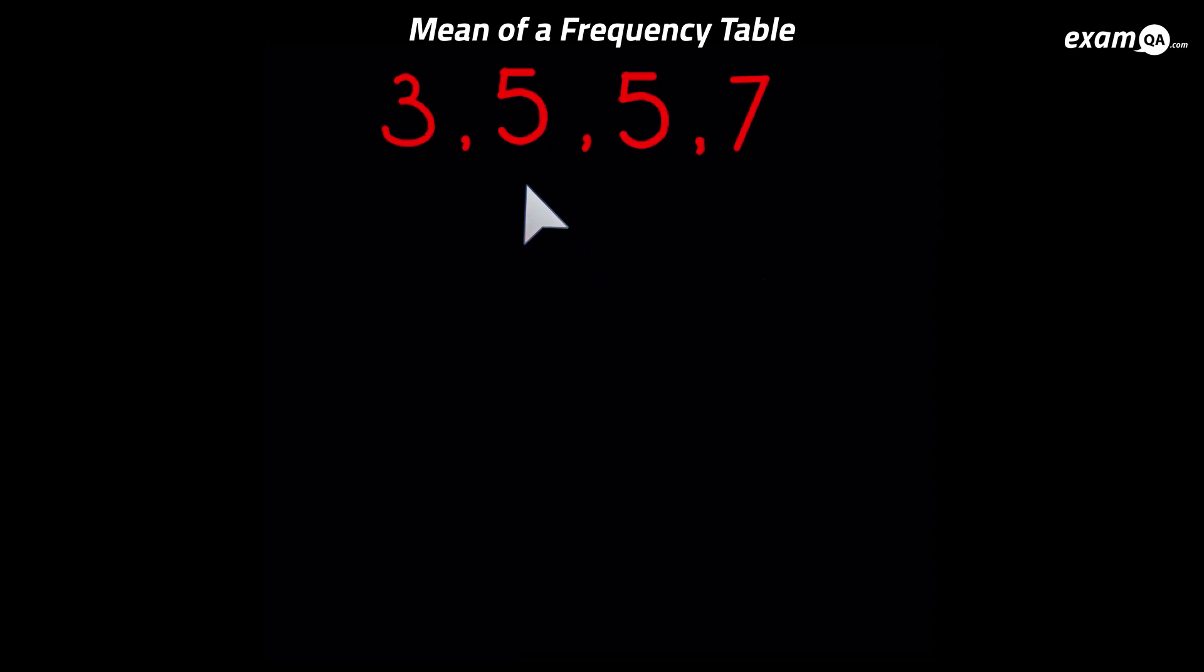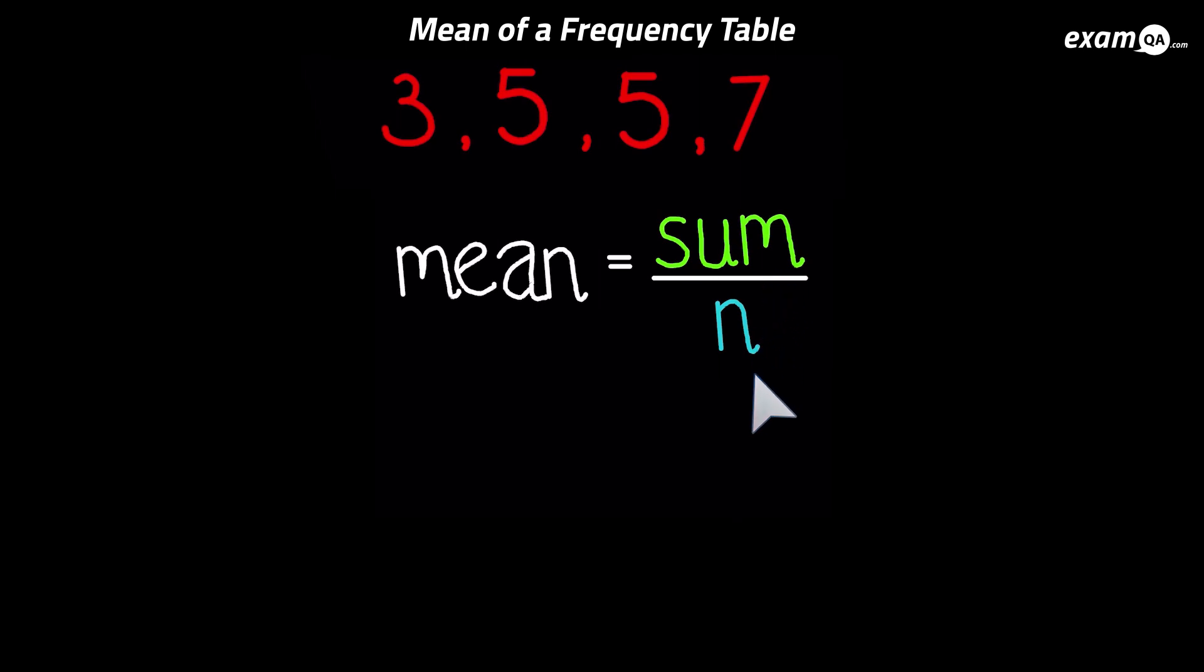So here I've got four values here. Now how do we work out the mean? It's this formula here. The mean is the sum of the values divided by n, which is how many values you have.